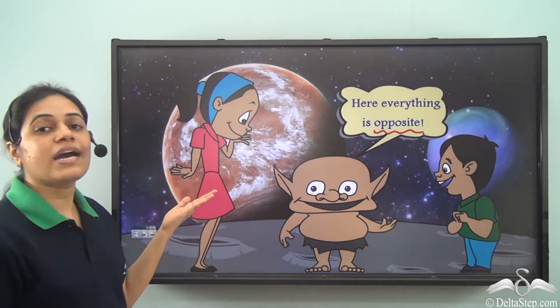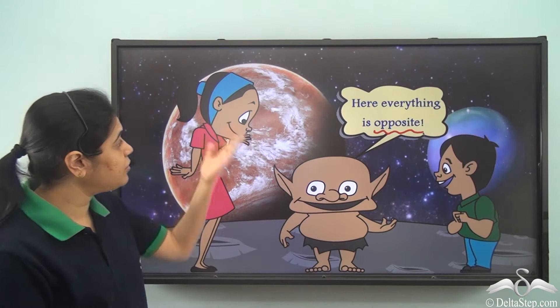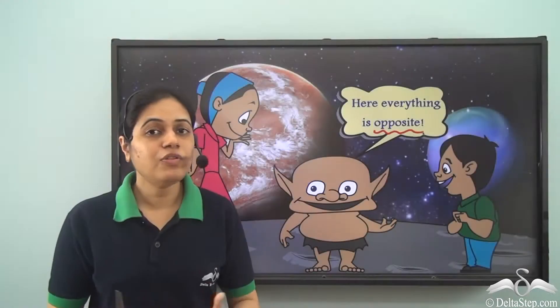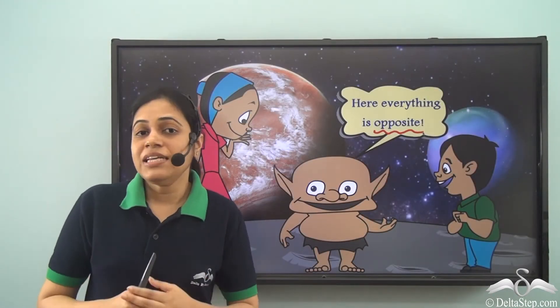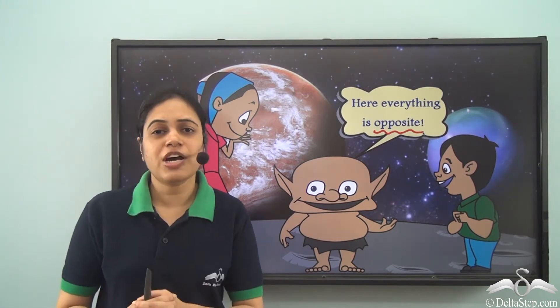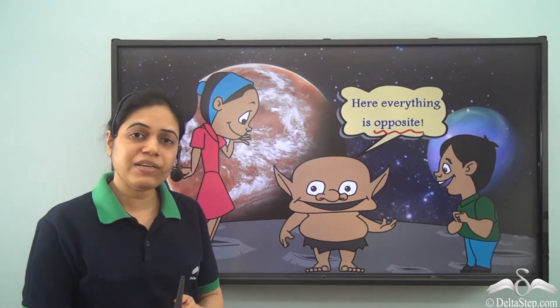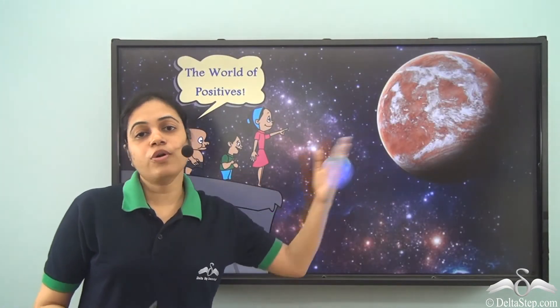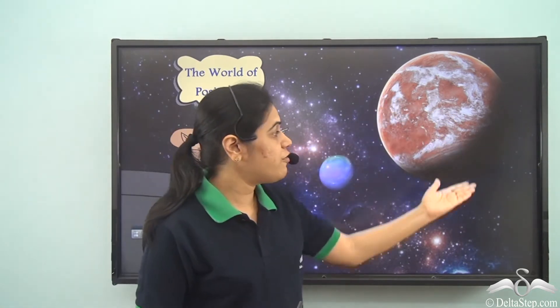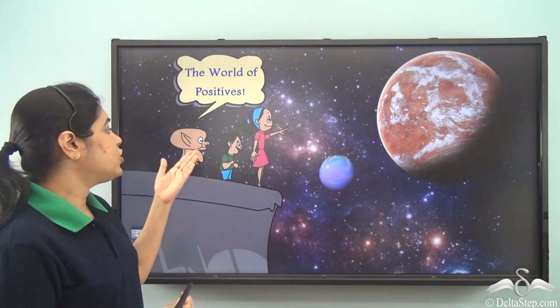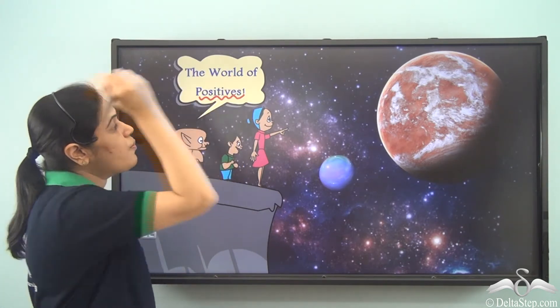So Riya, who was short and fat in her world, has now become tall and thin, and Rohan, who was tall and thin, has become short and fat. They were beginning to have fun and wanted to know more. They wondered if they could see their own world from this place, and the goblin showed them the world of positives — shining bright and dazzling, very different from this place.